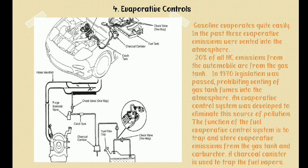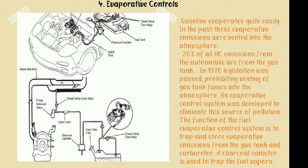Gasoline also escapes from the float chamber of the carburetor which is vented to the atmosphere. To arrest the escape of evaporating gasoline from the fuel tank and the float chamber of the carburetor, they are connected by tubing to a chamber filled with charcoal, where the vapors are absorbed. When the engine runs, the collected petrol or gasoline is sucked back by the carburetor and sent to the combustion chamber for burning. The evaporative gasoline is absorbed in the charcoal canister and then supplied to the intake manifold when the engine is running.